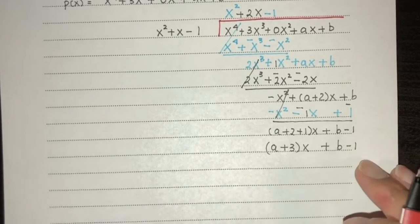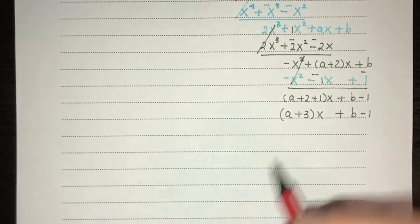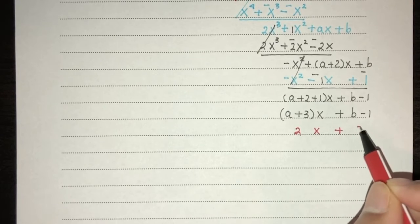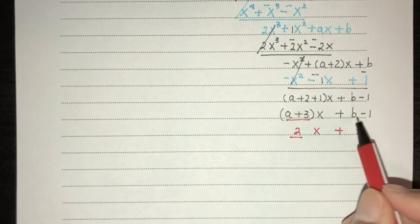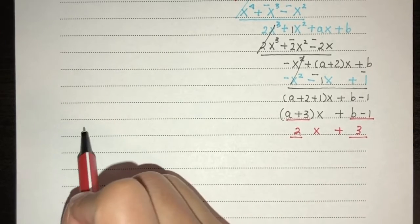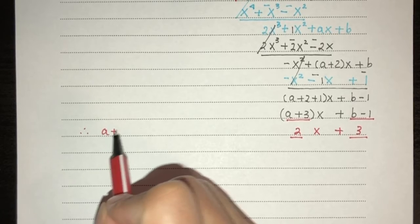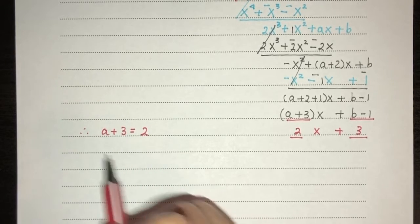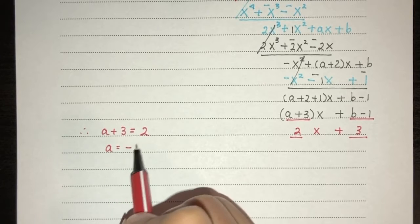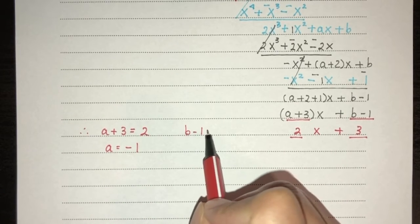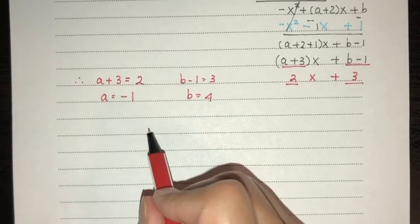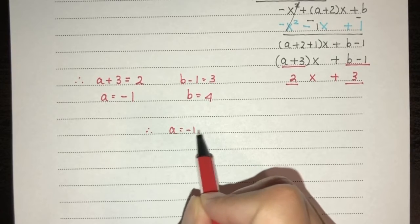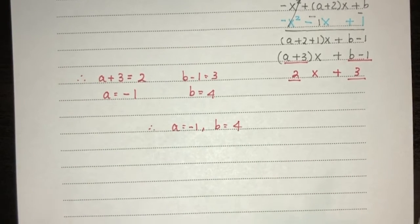Since the remainder from division equals 2x + 3, we compare coefficients: a + 3 = 2 gives a = minus 1, and b minus 1 = 3 gives b = 4. So the answer for question three is a = minus 1 and b = 4.